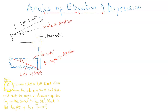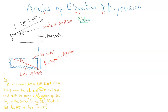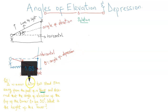So this is the first question. A woman 1.6 meters tall stood 50 meters away from the foot of a tower and observed that the angle of elevation of the top of the tower was 50 degrees. What is the height of the tower? Now, we know a tower to be a very tall building, so however tall the woman is, she is never going to stand a chance beside the tower.